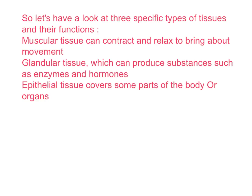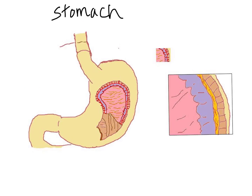Now let's look at these tissues making an organ. Let's see the stomach as a specific example of an organ made up of different types of tissues. What you see here is a small part of a stomach cut open, so we can see the different layers of different types of tissues inside. If you magnify that section, you get a view of the different layers of the stomach wall, which really illustrates how an organ is made up of different types of tissues.